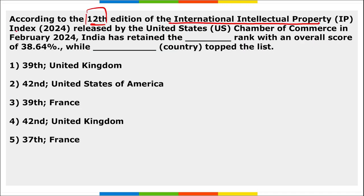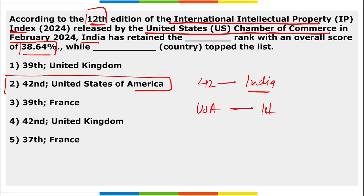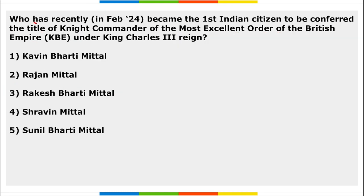According to the 12th edition of the International Intellectual Property Index released by the US Chamber of Commerce in February, India has retained the 42nd position with an overall score of 38.64. In this index, the USA secured the first position.